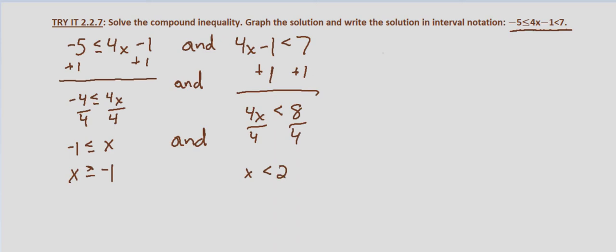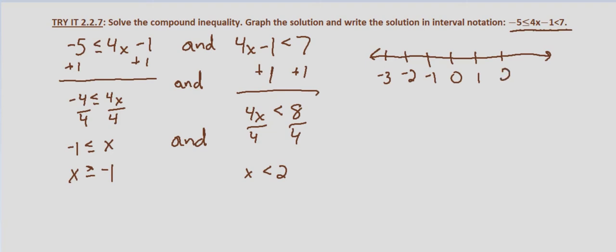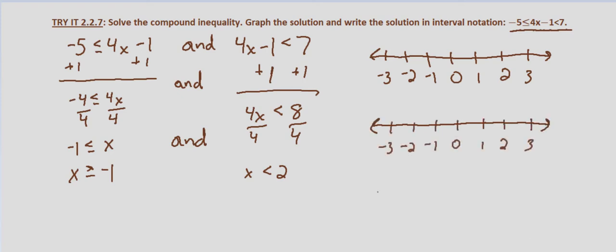Now we want to graph our compound inequality, so we'll graph the left hand side first. We'll set up a number line with points at negative 3, negative 2, negative 1, 0, 1, 2, 3. We'll copy this down because we know we're going to graph it as well, and we'll set up three number lines since we know we'll need them.